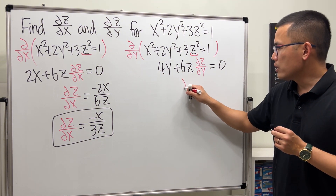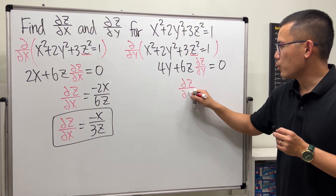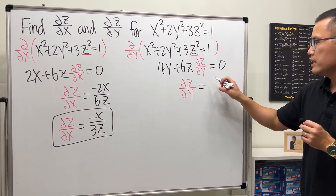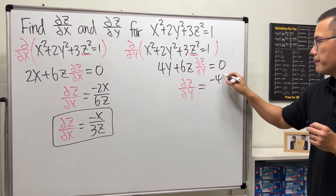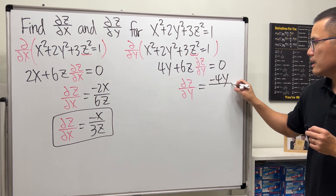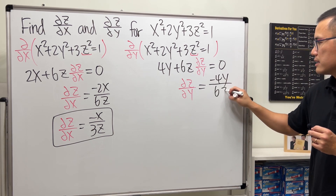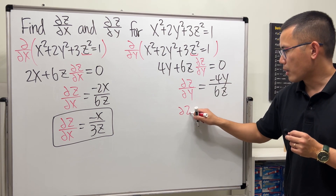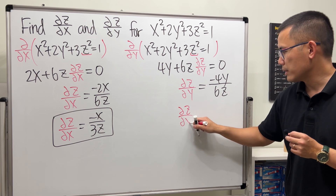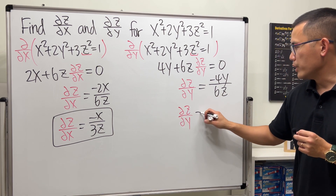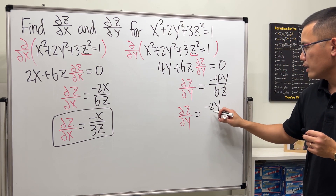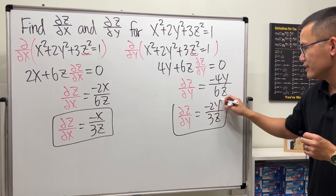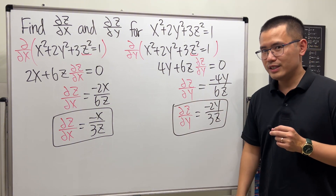Now, partial z with respect to y is just equal to negative 4y divided by 6z. Reducing this a little bit, partial z with respect to y is negative 2y over 3z. And then we're done.